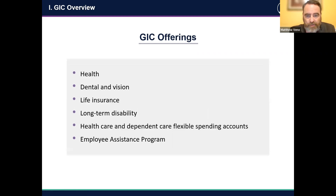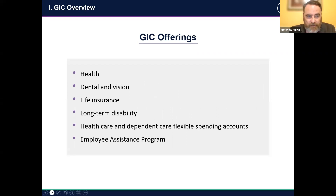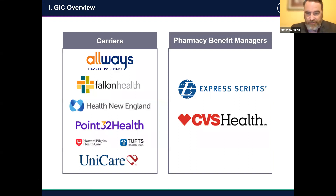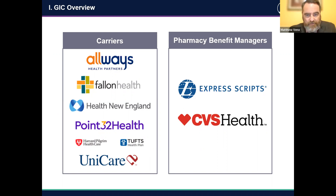The GIC aims to meet this mission through its coverage offerings, which include a wide array of options including healthcare, dental, vision, life insurance, and long-term disability insurance. Our current health insurance carriers and pharmacy benefit managers are noted on the next slide. Also not shown are the carriers for our ancillary benefits such as MetLife for dental coverage, Davis Vision, and Benefit Strategies that handles our flexible spending account.